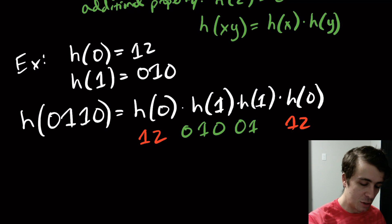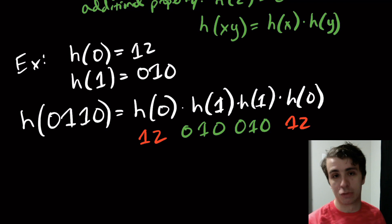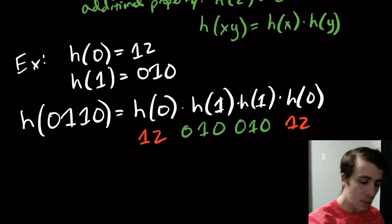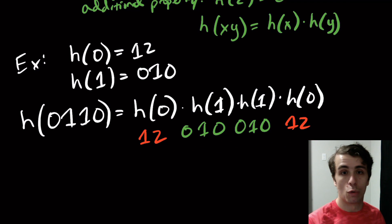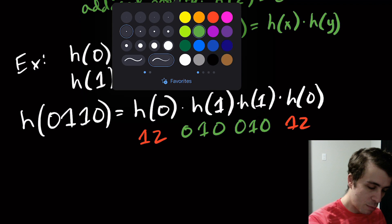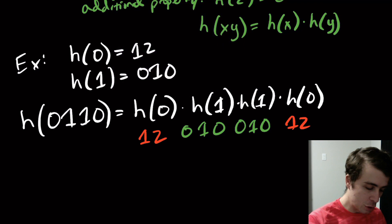So we replace h(0) with 12, h(1) with 010, h(1) again with 010, and h(0) again with 12. The final string we get is 1 2 0 1 0 0 1 0 1 2. And in fact, we've proved on this channel before that the regular languages and the context-free languages are closed under morphism.